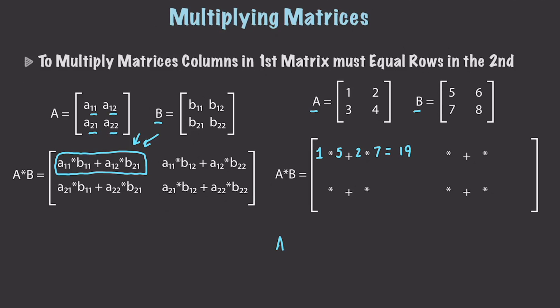So we can think of A times B being redrawn down here — so there's 19 in the upper left. For the next value, I take A11 again which is 1, then B12 which is 6, then A12 which is 2, and B22 which is 8. If I perform that calculation, I get a value of 22. On the next slide I'm going to show you in a more visual way exactly how this all works out.